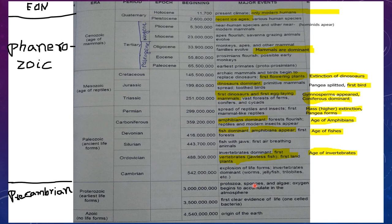In Permian: mass extinction and Pangea forms. In Triassic: first dinosaurs appear and gymnosperms evolve, conifers are dominant. In Jurassic: dinosaurs are dominant, first bird evolved, and Pangea split. In Cretaceous: angiosperms evolved — that means first flowering plants evolved — and extinction of dinosaurs. That is very, very important. Gymnosperms evolved in Triassic and angiosperms evolved in Cretaceous — don't forget that.